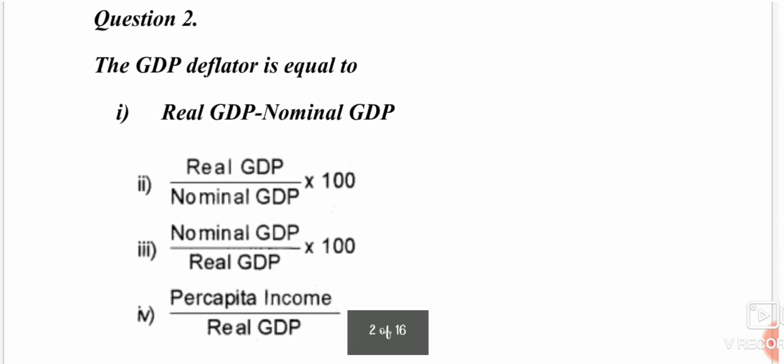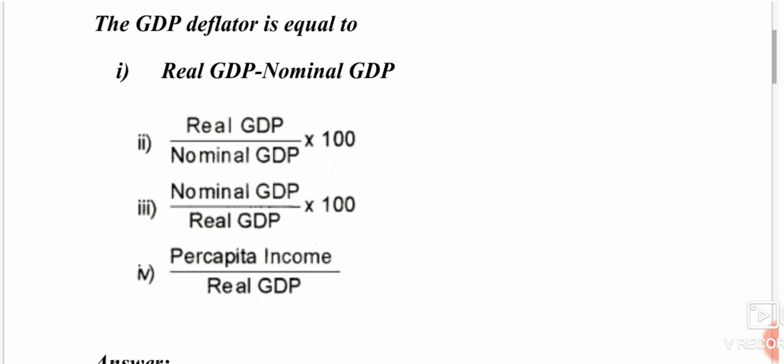The next question: GDP deflator is equal to which of the following? Options: real GDP minus nominal GDP; real GDP divided by nominal GDP into 100; nominal GDP divided by real GDP into 100; or per capita income divided by real GDP. The answer is the third option — nominal GDP divided by real GDP into 100.